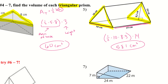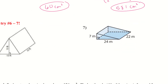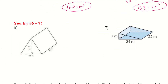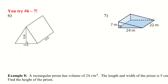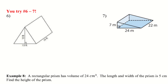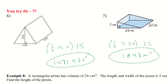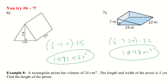Go ahead and try numbers six and seven — very similar to the last two. The answers are 1072.5 feet cubed for six and 1848 meters cubed for seven.